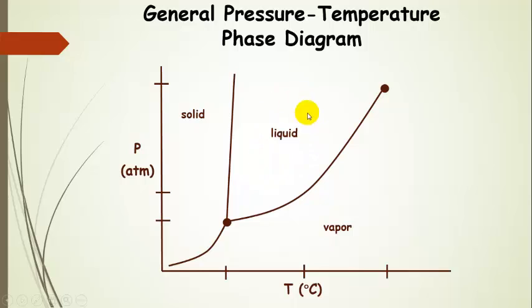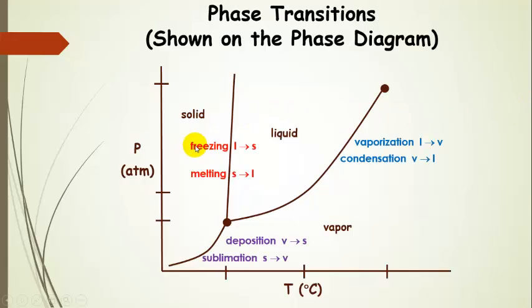And then liquid is going to be intermediate. So intermediate conditions of temperature and pressure. Here are our phase transitions. So freezing is along this line, liquid going to solid. That's freezing.